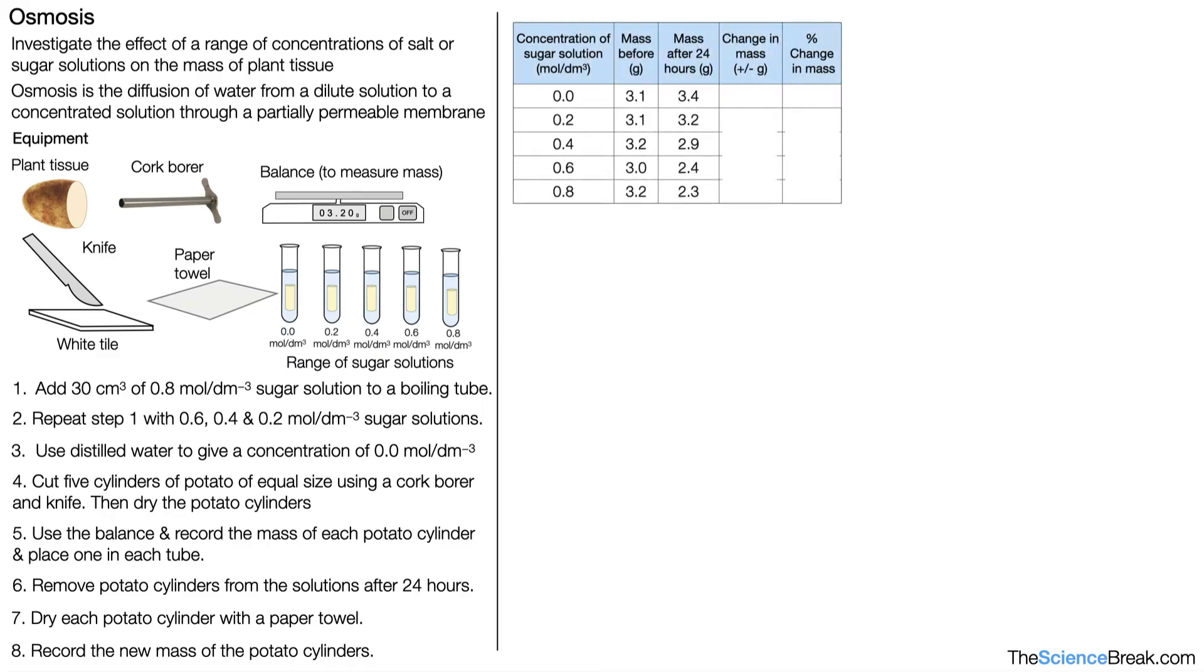Here is a set of results. We have the concentration of sugar solution in mol/dm³ on the left, the mass of the potato before and after, and the change in mass and percentage change in mass. We need to be able to calculate the change in mass and the percentage change in mass. Let's see how we can do that.